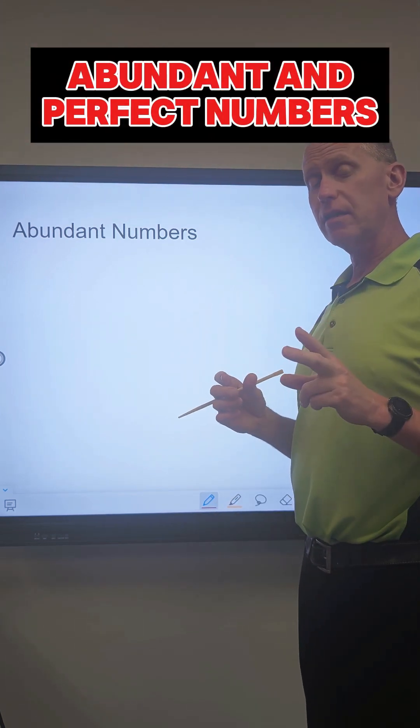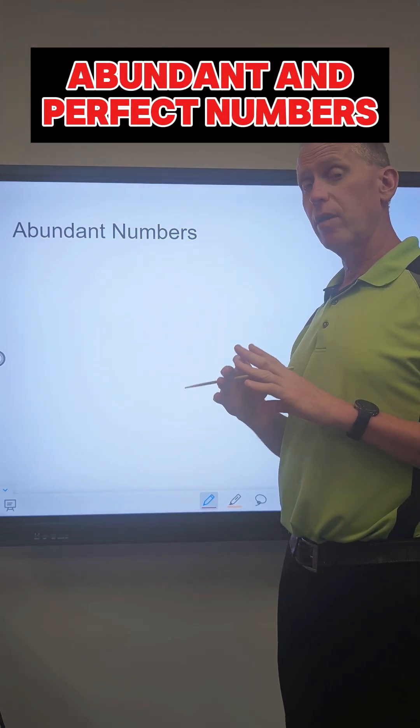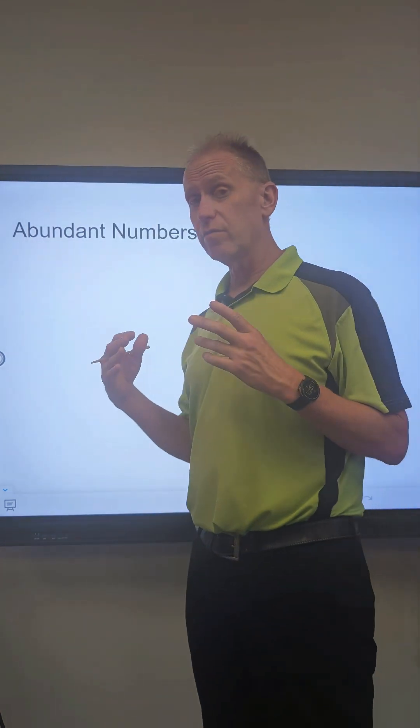All right, today we're going to talk about two things: abundant numbers and perfect numbers, and they're both very interesting numbers. They all have to do with factors.